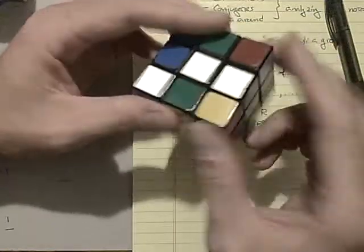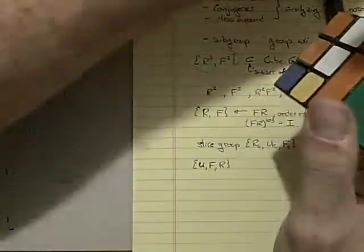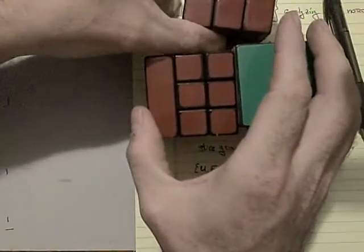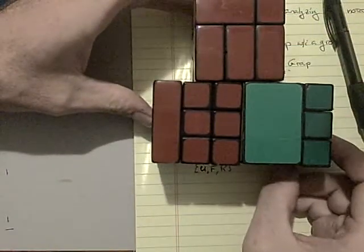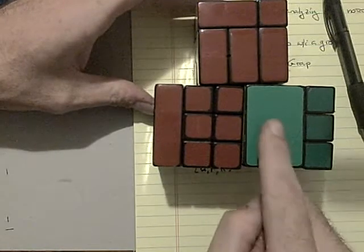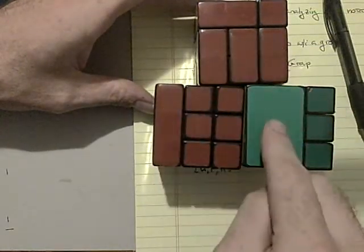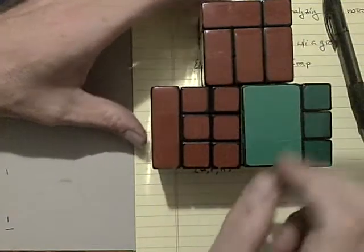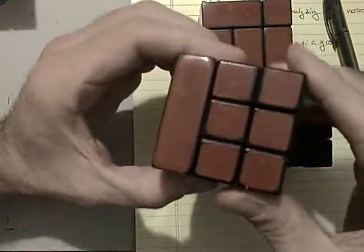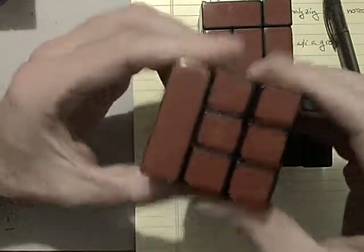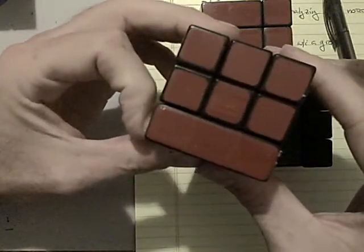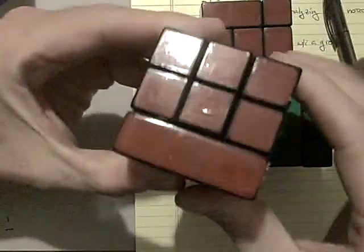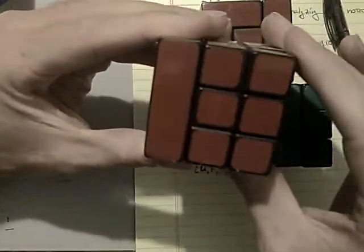The other bandage cubes I have don't form groups, and so that can be a little trickier. You notice in these puzzles here, what moves you're allowed to make and what moves you're not allowed to make depends on the orientation of these layers. I can turn the right layer right now, but if I make, say, an F prime, now R is no longer available. And so it can be difficult to write down algorithms for these because what works one moment may not work the next depending on where this big chunk is.